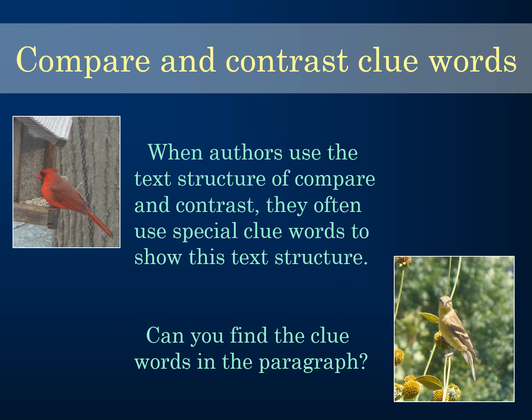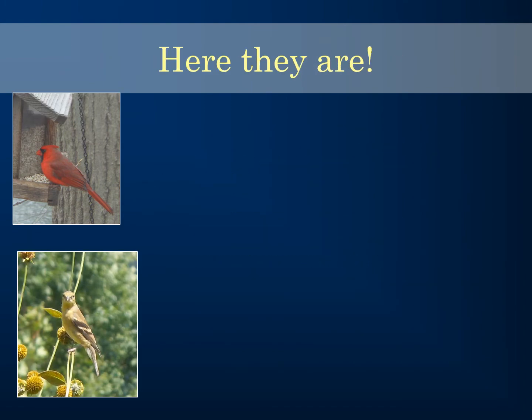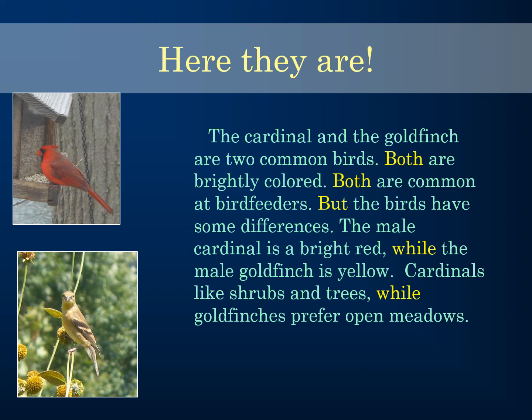When authors use compare and contrast, they use special clue words. Can you find them? The word 'both' signals comparison — finding things that are similar. Then words like 'while' signal differences. For example, 'the cardinal is bright red while the goldfinch is yellow' signals a difference between the two birds.